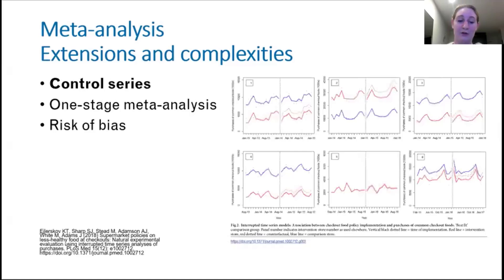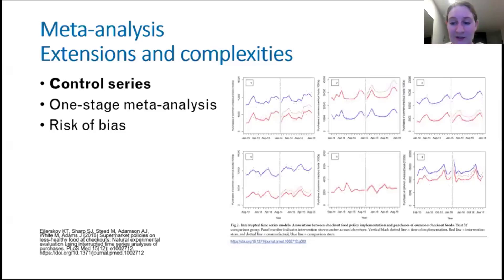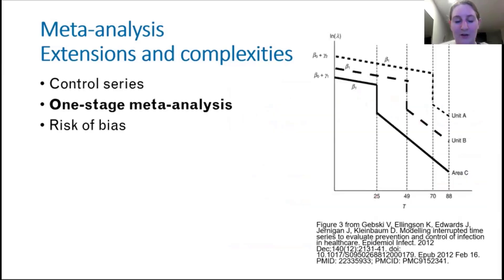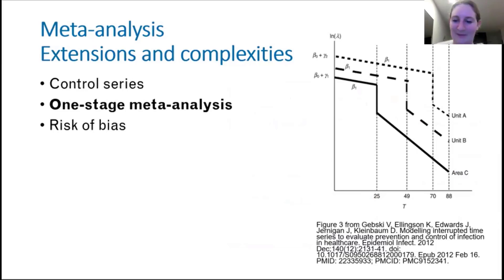There are some things we don't have time to get into today. Simon mentioned the control series, which provides evidence about whether we can really attribute changes in the outcome to the interruption or to some contemporaneous event. There are a range of different control series — location-based controls or control outcomes — and different ways to incorporate them, whether at the ITS analysis level or comparisons in your meta-analysis. We've spoken only about two-stage meta-analysis, but there are also methods for one-stage meta-analysis — analysing the ITS studies and getting the meta-analytic effect all in one model. There's still much research to be done in both spaces.